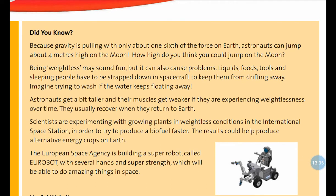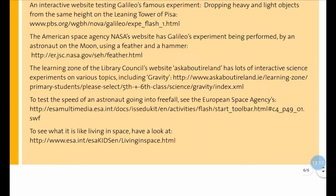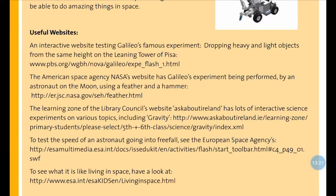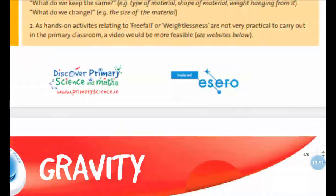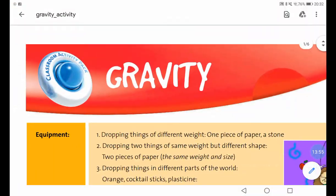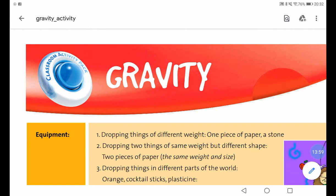The European Space Agency is building a super robot called EuroBot with several hands and super strength, which will be able to do amazing things in space — you could look that one up. There are lots of interactive links you can click on and explore more about this topic. But the main thing I would like you to do is design a parachute. If you feel you have nothing at home to make one, you can read all this information, investigate the links, and do some of the other activities on the page. Right, boys and girls, off you go — you have until Wednesday. Bye!